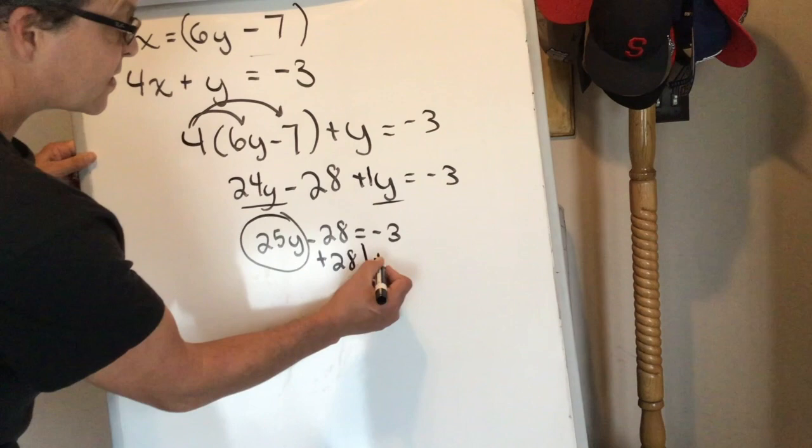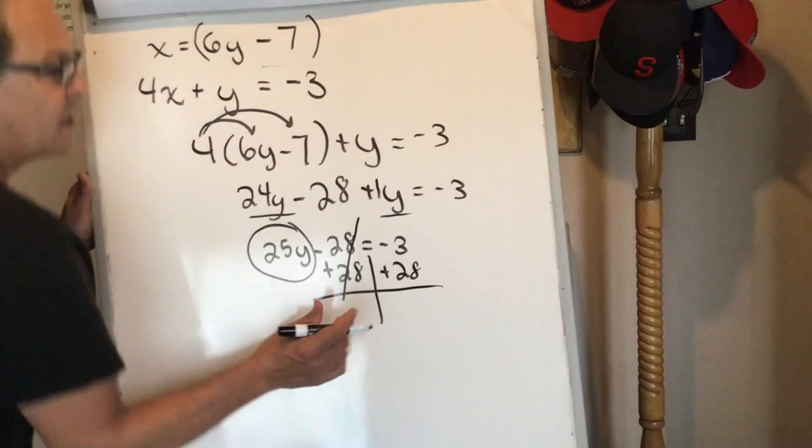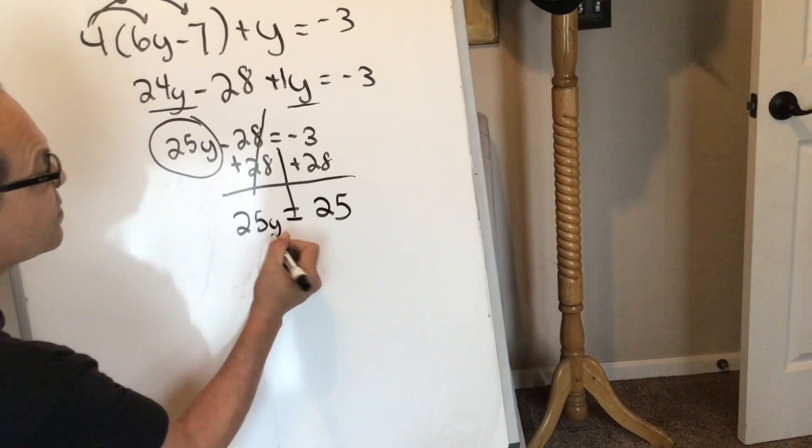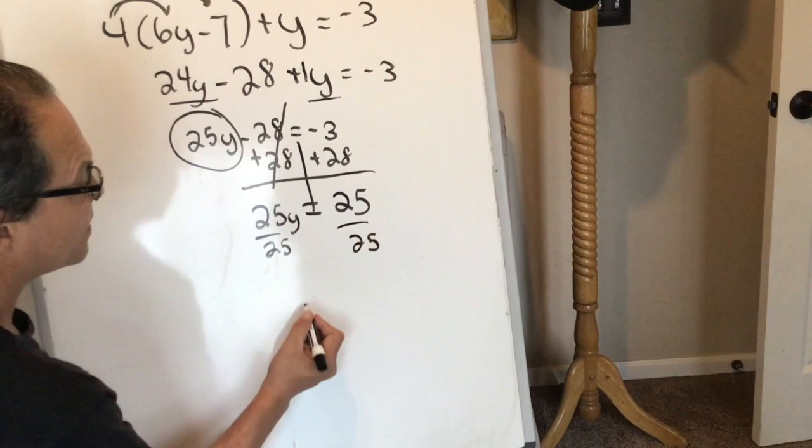Negative 28 plus 28 is gone. Now since these have different signs, I'm going to keep the side of the greater number and subtract. 25 times y equals 25. When I divide both sides by 25, y is equal to 1.